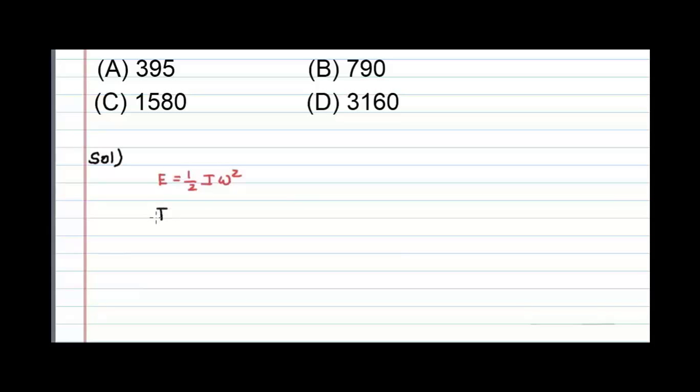For a flywheel, we can write moment of inertia I is equal to m r square by 2, where m is the mass of the flywheel in kg and r is the radius. And we can write omega is equal to 2 pi n by 60, where n is the angular speed of the flywheel in RPM.